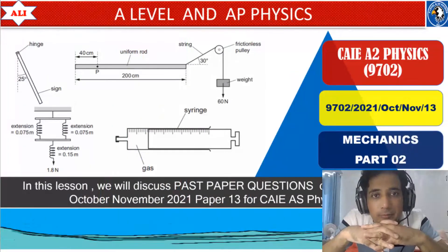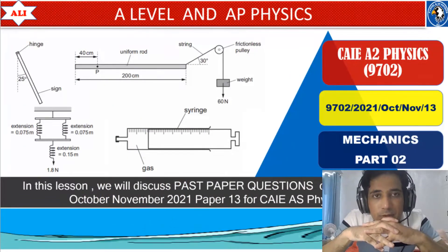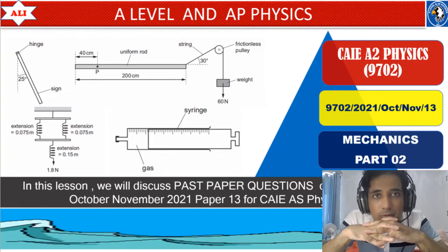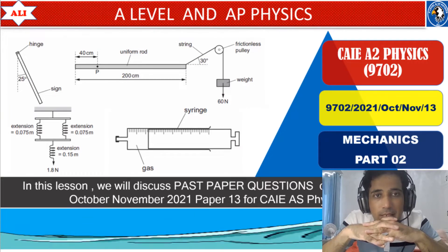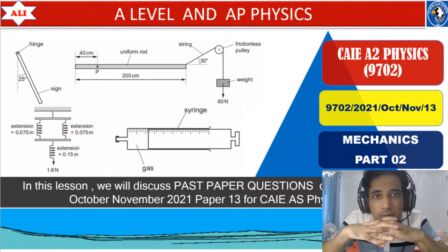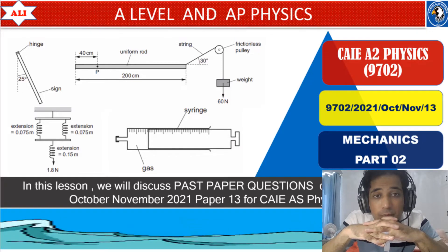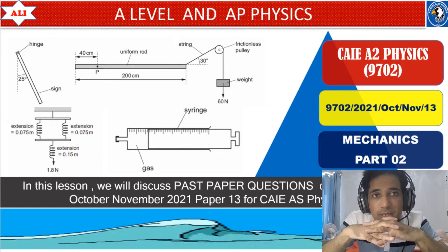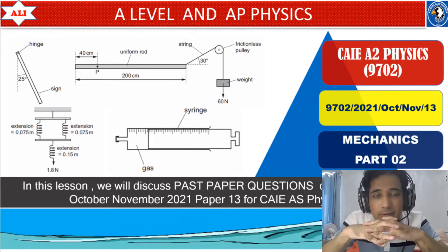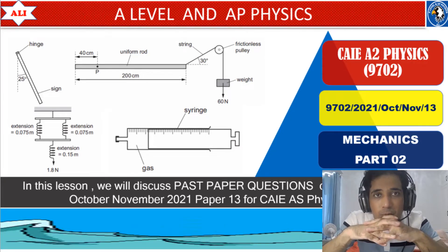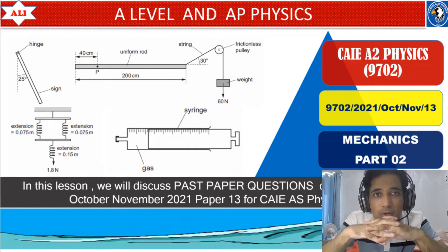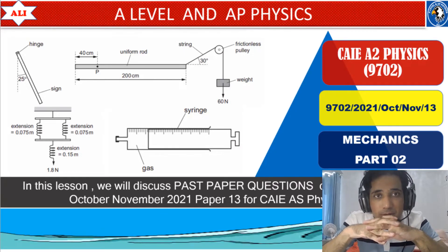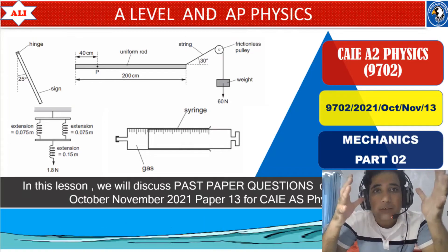Welcome to A Level and AP Physics. In today's lesson we will discuss past paper questions on mechanics from October November 2021 paper 1. In the last class we have discussed from question 1 to question 10 and the solution of those questions you can find in mechanics part 01. In today's class we will start from question number 11 and we will try to improve our conceptual understanding of mechanics by solving past paper questions. Let's study together. Let's improve together.